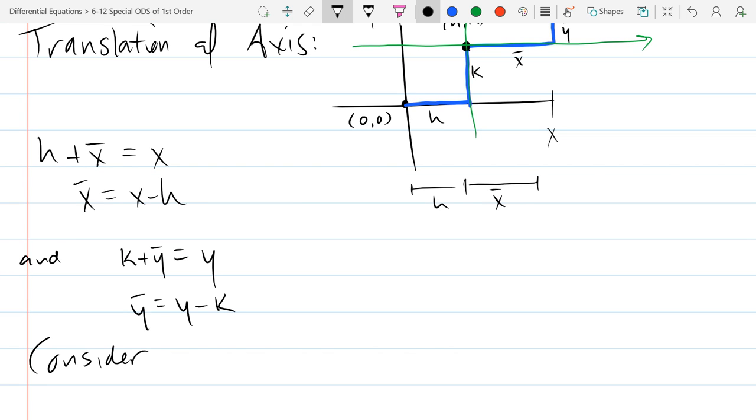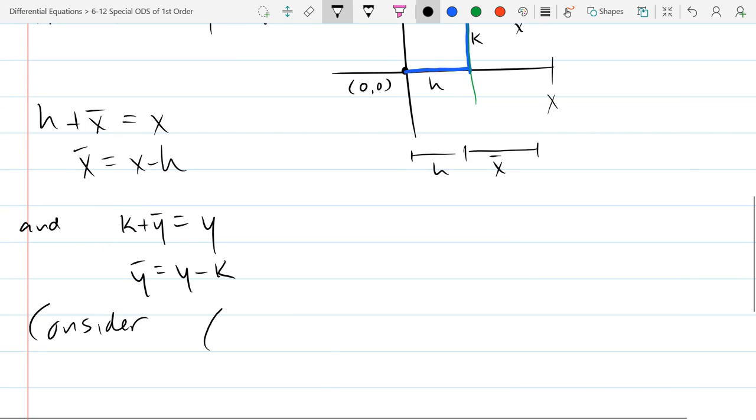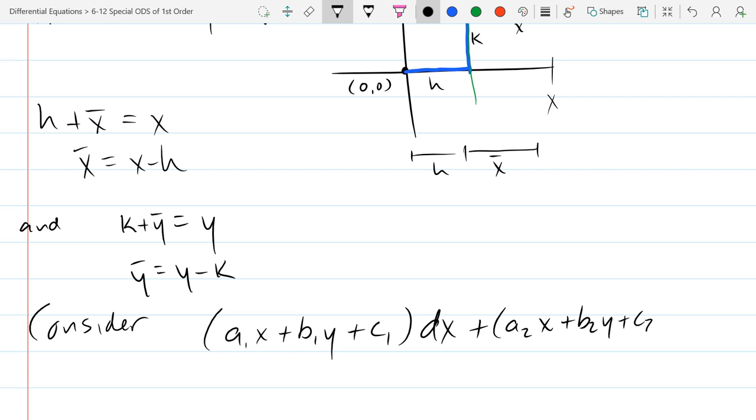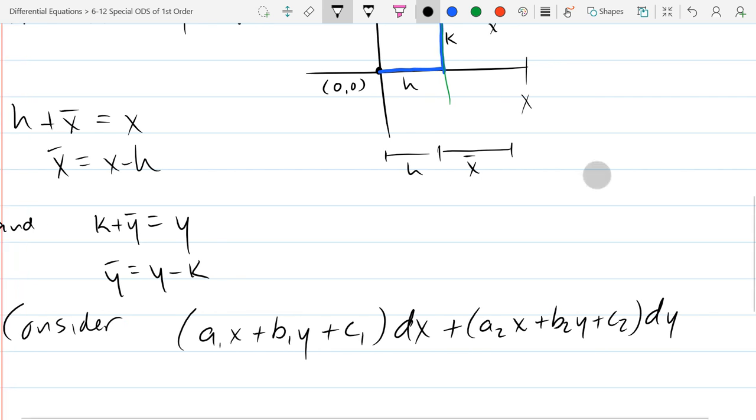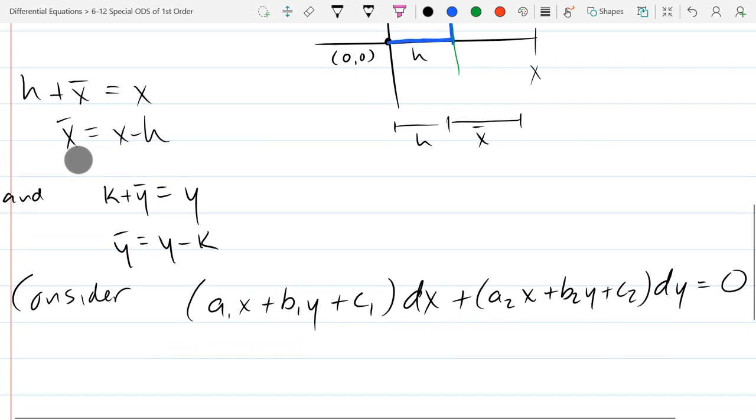So this new coordinate system is basically a translation or a shift of our old coordinate system. And we use bars. So just like before, why in the world did I talk about homogeneous? The answer was because luckily it worked out to be a separable after we did some work. So this translation is going to eventually turn this into a nice solvable differential equation.